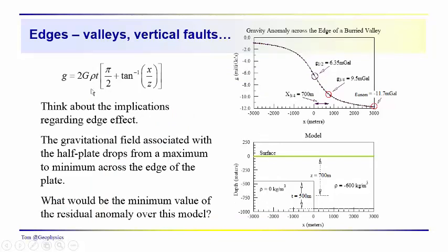Another anomaly, another simple geometrical representation that you'll run into is one for the half plate. This would be something that you could use to model a fault edge. And it takes this form: G equals 2G rho T times pi over two plus the inverse tangent of x over z. And that anomaly, when plotted up, looks like this. And we can see that the anomaly drops to one half of its maximum value, right over the edge of the fault, or the offset, or the glacial valley, or whatever it is that you're using this equation to represent.